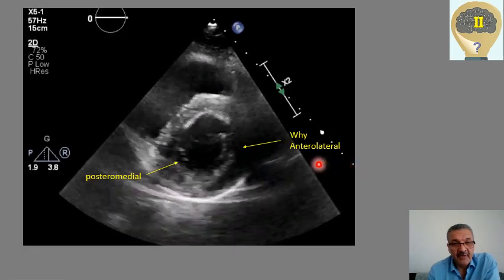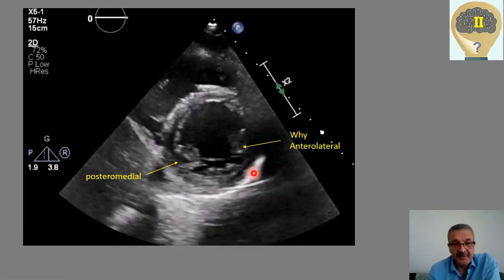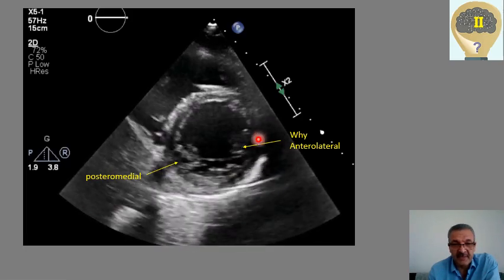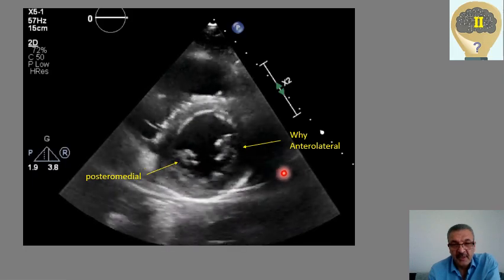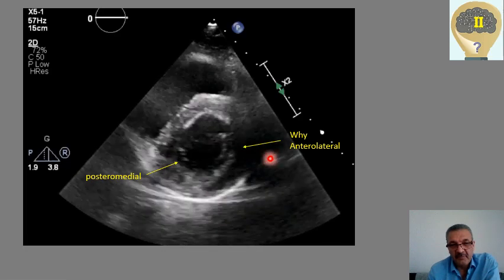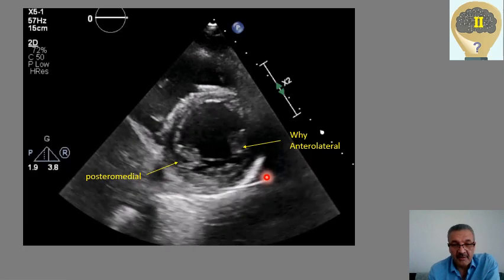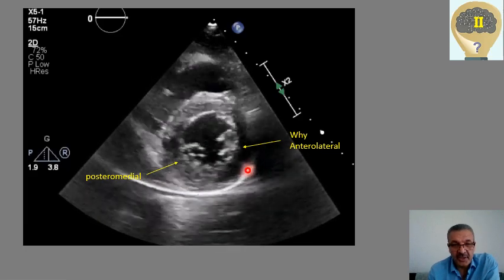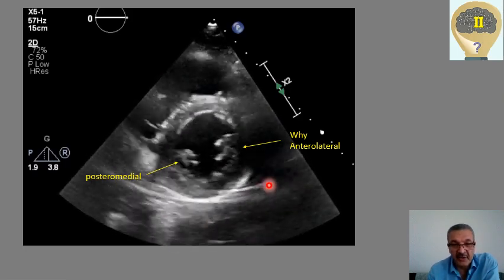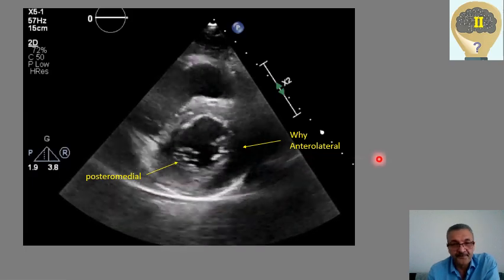Here we have a subcostal external short axis, short axis view at the level of the papillary muscles. As you know, there are two papillary muscles — anterolateral and posteromedial. If you look at the image and put a line here, both of them appear posterior. So why do we call one of them anterolateral? And second, does the location of those papillary muscles in the image correspond with their real anatomy and the names we call them in echo — or not? And why?